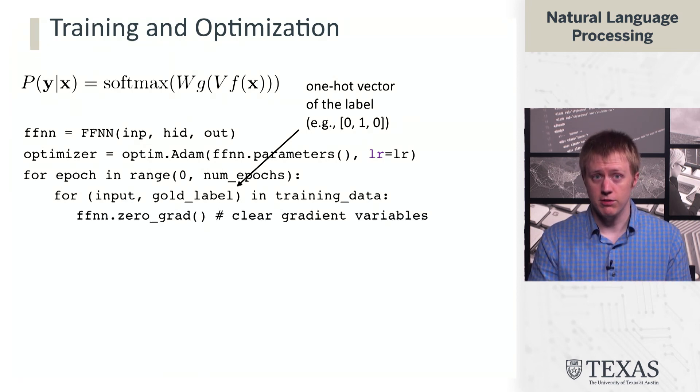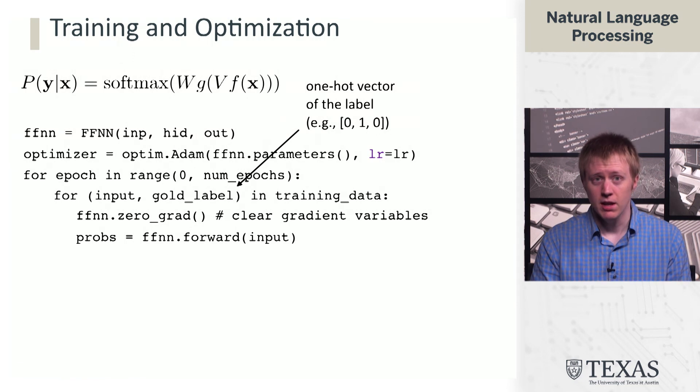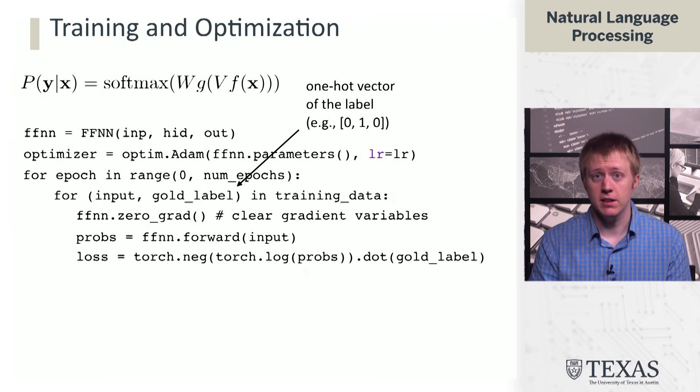The first thing you do is you have to clear out gradient variables using this zero grad call. The reason is because PyTorch caches information about the gradients inside the actual network. If you do not do this, you'll keep accumulating gradient information and everything will be messed up. This will be a bug that's very hard to find. We do that, then we call forward on the input and we get some probabilities as output. We've defined the forward network to go all the way to softmax and give you real valued probabilities.